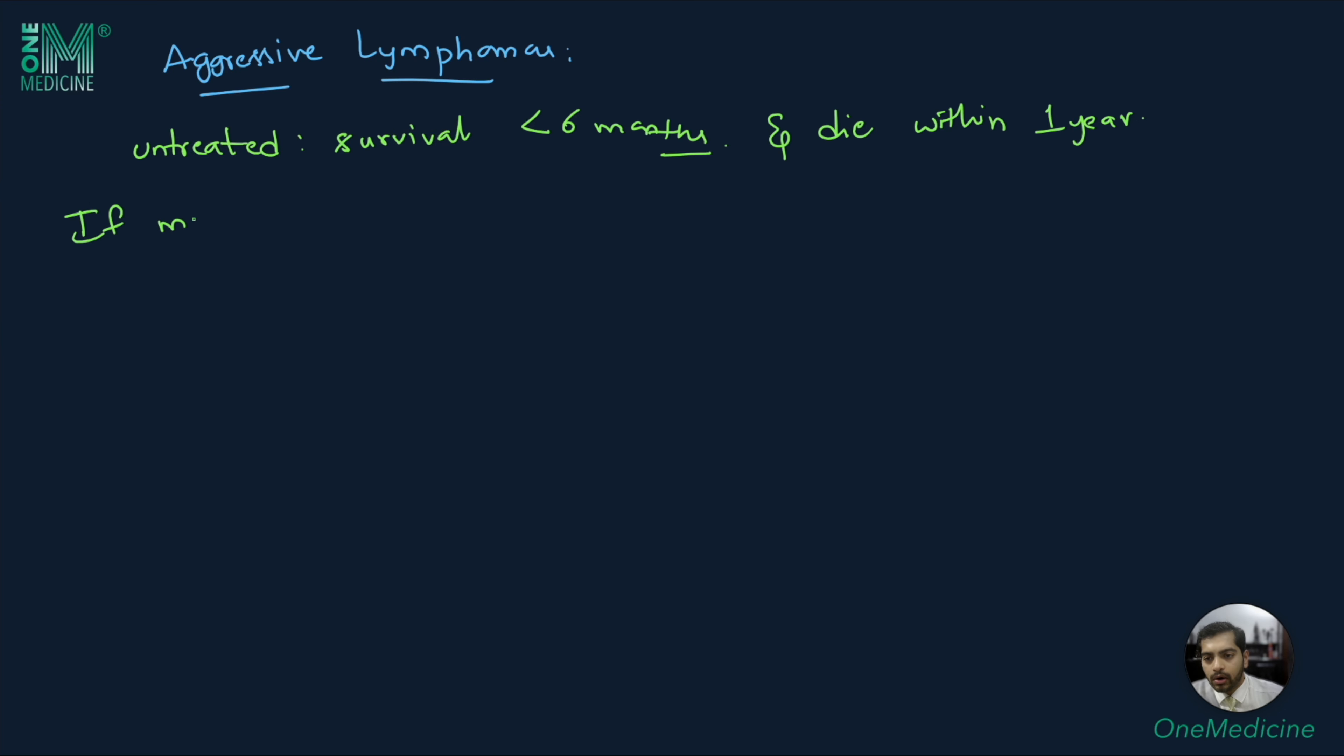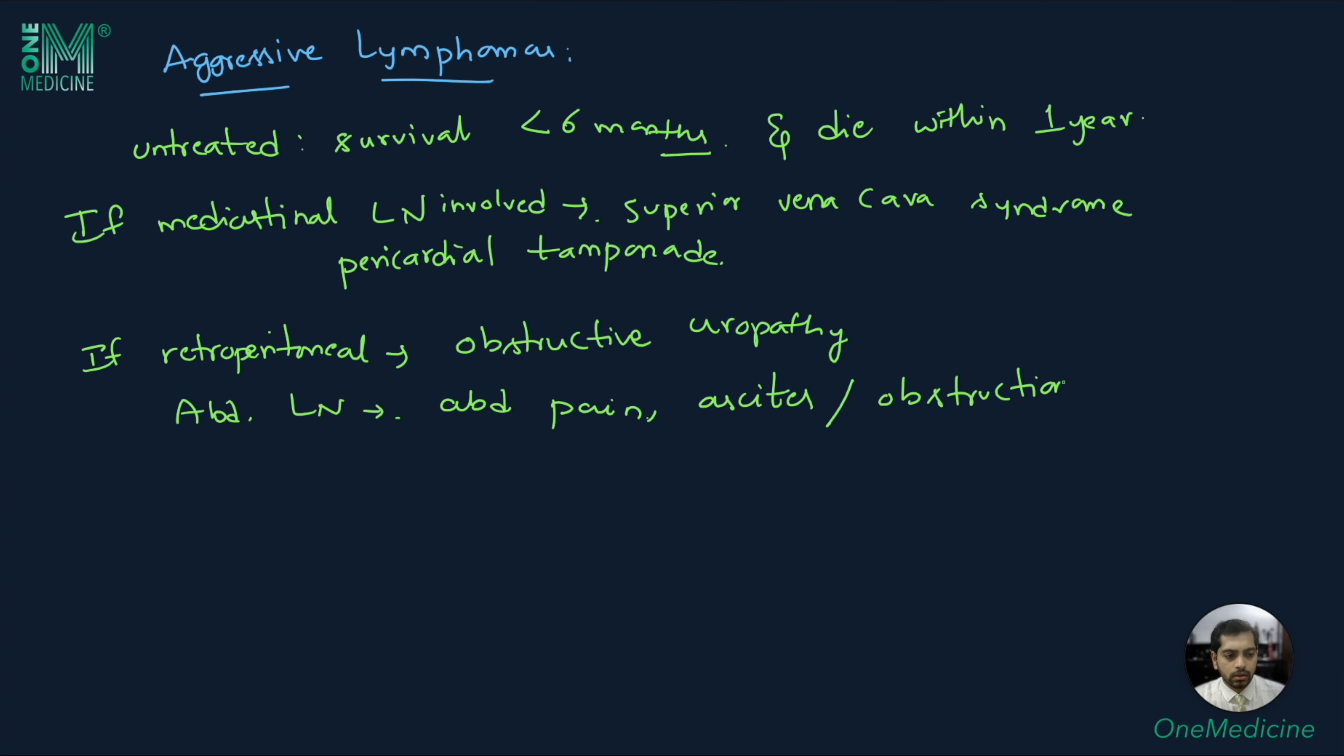If the mediastinal nodes are involved in these patients, it may produce superior vena cava syndrome or pericardial tamponade. If retroperitoneal nodes are involved, they can cause obstructive uropathy. Abdominal lymph nodes, if involved, can cause abdominal pain, ascites, or even obstruction or perforation of the GI tract.